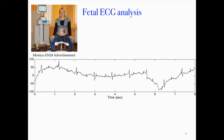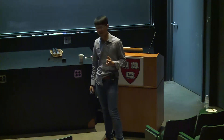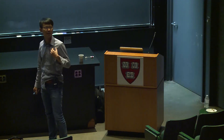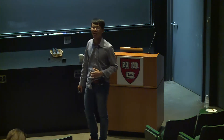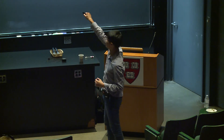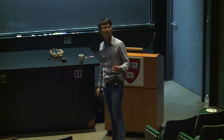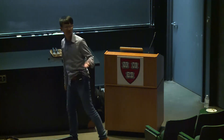The second example is the fetal electrocardiogram. When females are pregnant, before the due date, we can place ECG electrodes on the abdomen. If you put an ECG electrode on the female's abdomen, somehow you can record two different kinds of electrical activities: the first is maternal cardiac activity, and the other is fetal cardiac activity. So this recorded ECG signal contains not only maternal ECG but also fetal ECG.